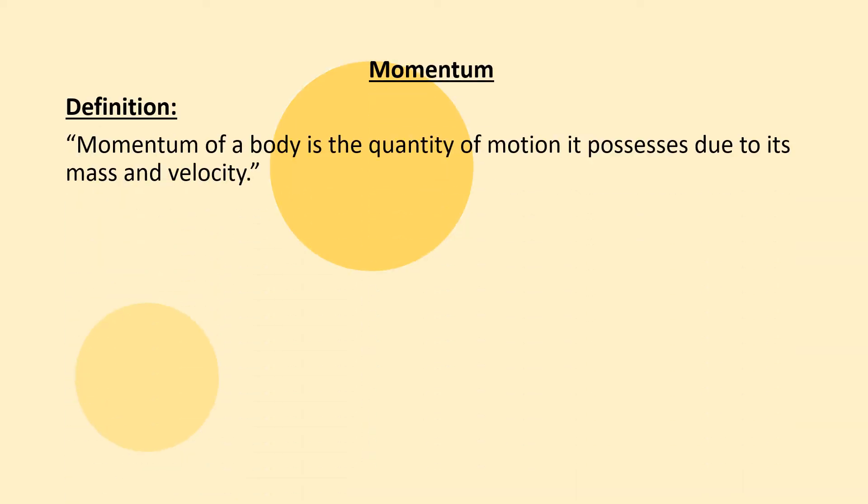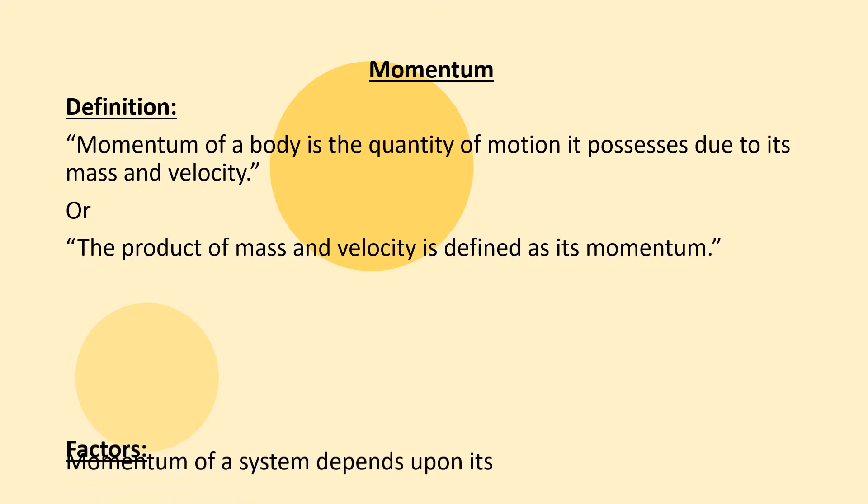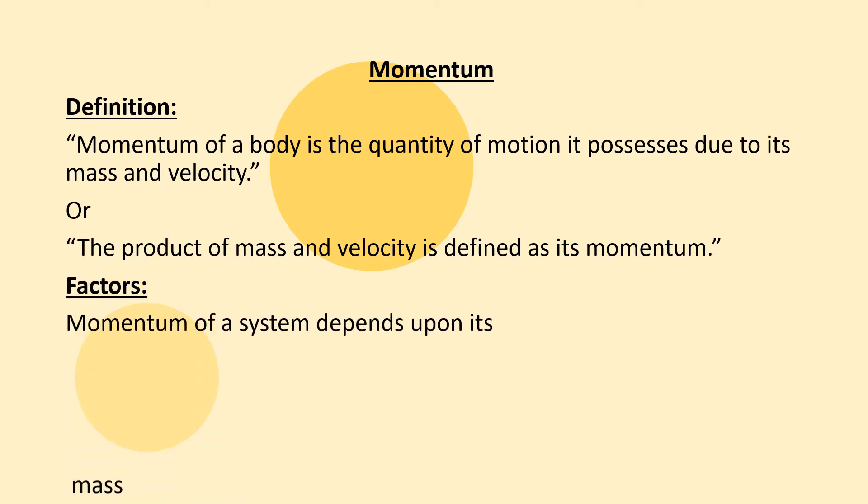First we revise what is momentum. Momentum of a body is the quantity of motion it possesses due to its mass and velocity, or product of mass and velocity defined as its momentum. So it depends upon mass and velocity.